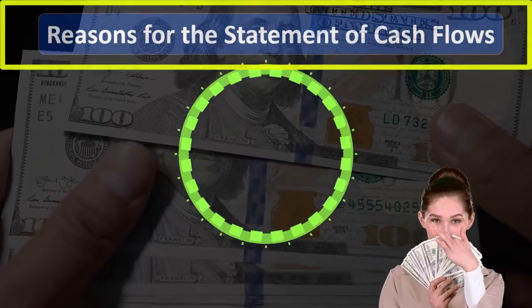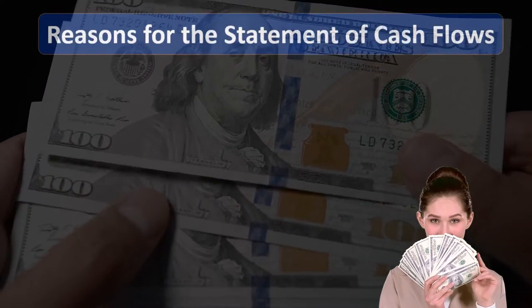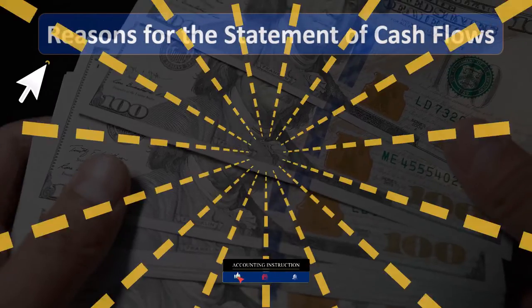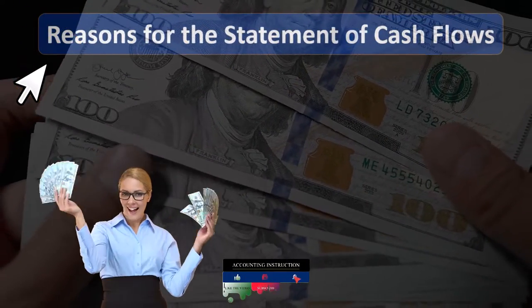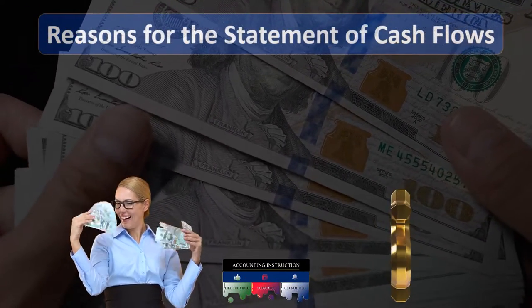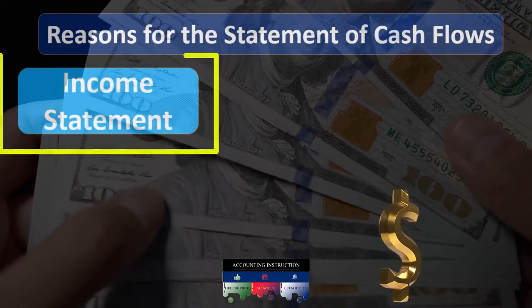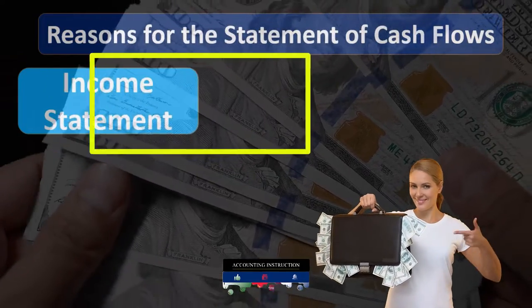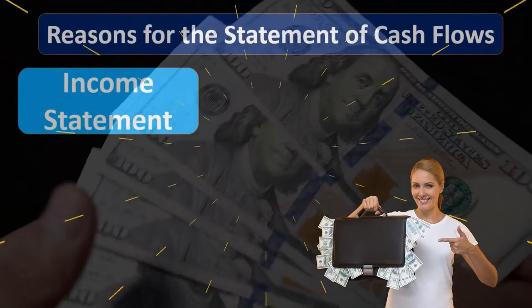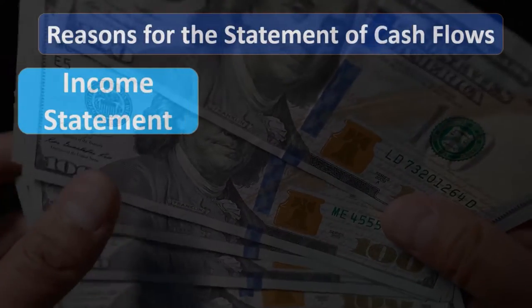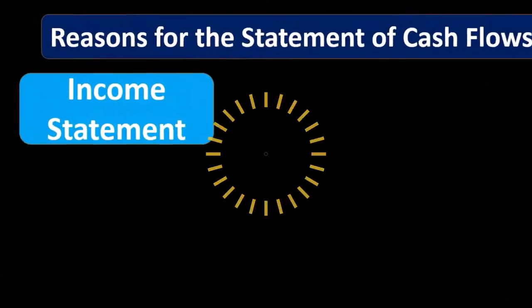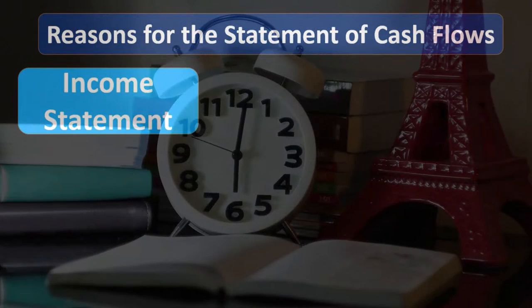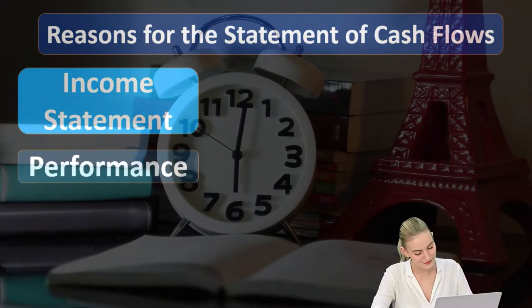What information are we going to get from the statement of cash flows that's not on the other financial statements — those being the balance sheet, the income statement, the statement of equity? We're mainly comparing against the income statement because the statement of cash flows is going to give us similar information. It's going to give us information over time, what's happening over time, unlike the balance sheet, which is a point-in-time statement. That's typically our income statement, which measures performance.